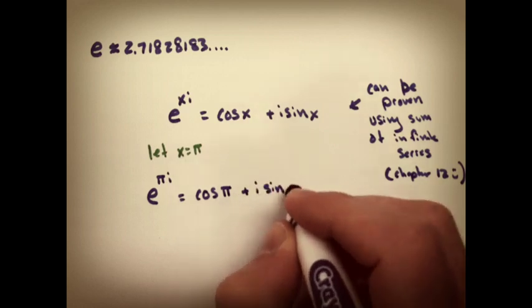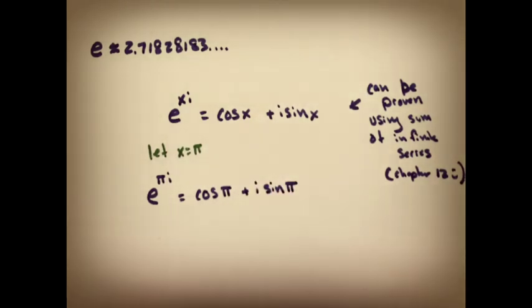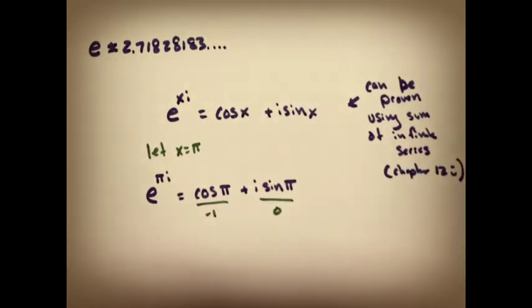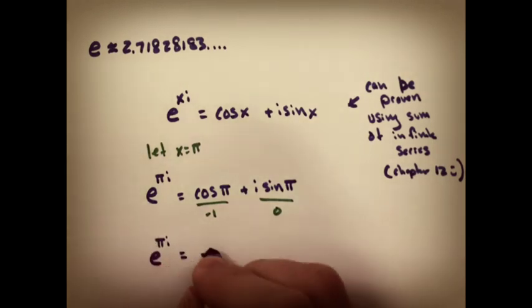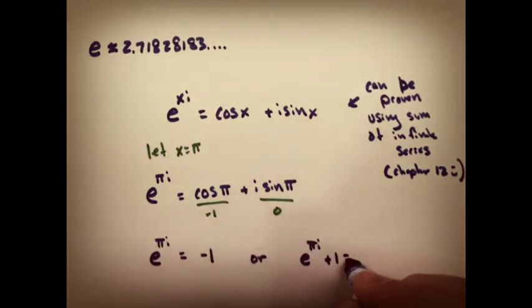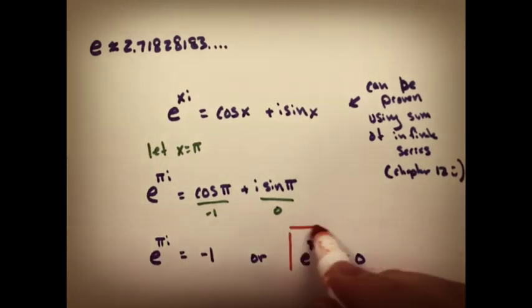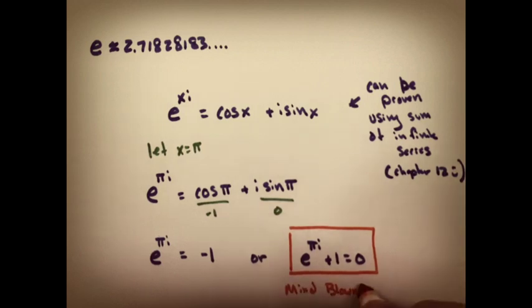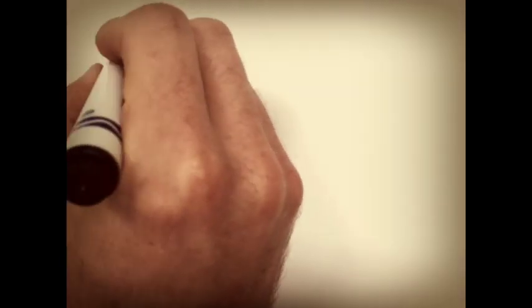Well, if you swap out x for pi, you end up with e to the pi i equals cosine of pi plus i sine of pi. And if you simplify that, you end up with e to the pi i equals negative 1. Slide that around, and you get e to the pi i plus 1 equals 0, and you've tied together all five of the greatest numbers in the universe. More on that later.